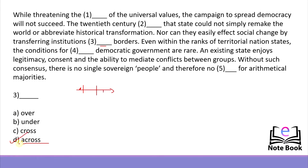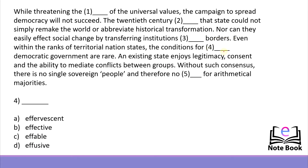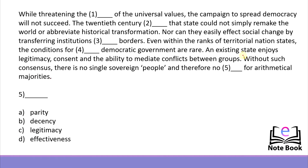For the fourth blank: 'Even within the ranks of territorial nation states, the conditions for blank democratic government are rare.' This is an easy one — the only option that fits in vocabulary terms is 'effective.' Effective means something that is successful in producing the desired outcomes, while the other options are completely out of context. So we can mark option B — effective — very easily.